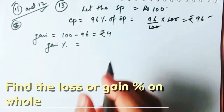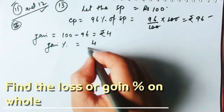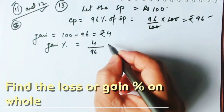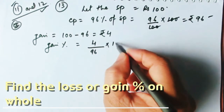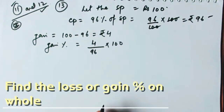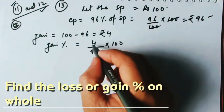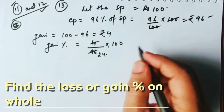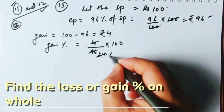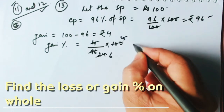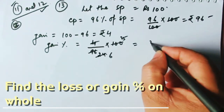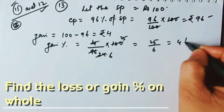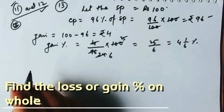Gain% = (gain/CP) × 100 = (4/96) × 100. Simplifying: 4 goes into 96 twenty-four times, giving 25/6 = 4⅙%. So the gain percent is 4⅙%.